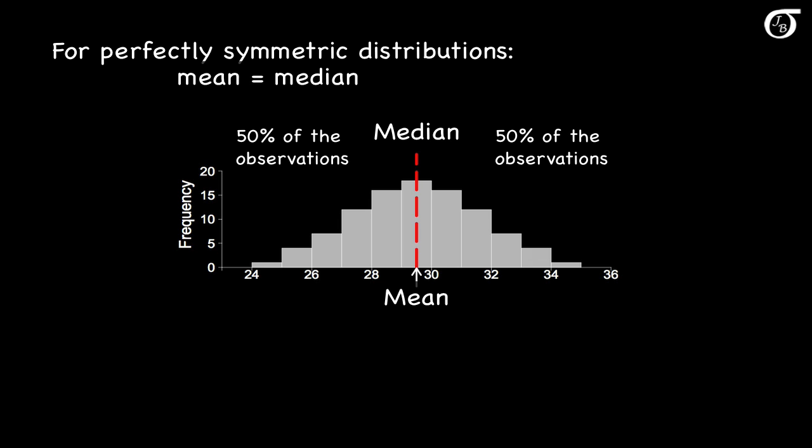For a perfectly symmetric distribution, the mean and median will be equal. For an approximately symmetric distribution, the mean and median will be close in value.